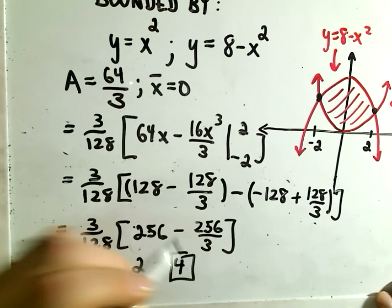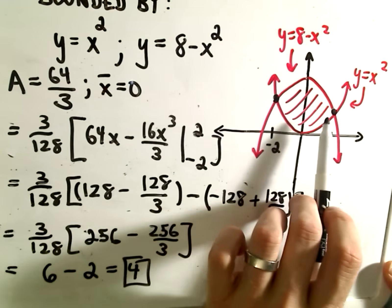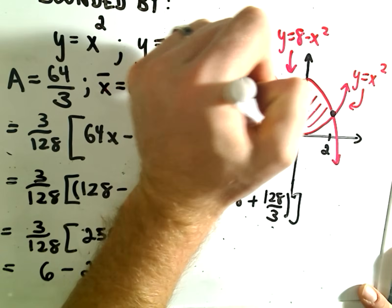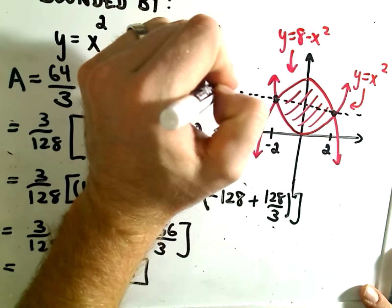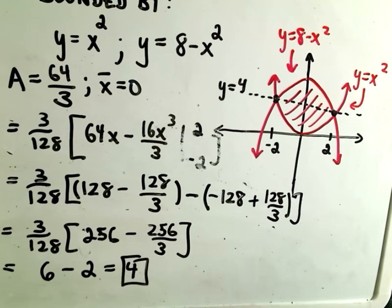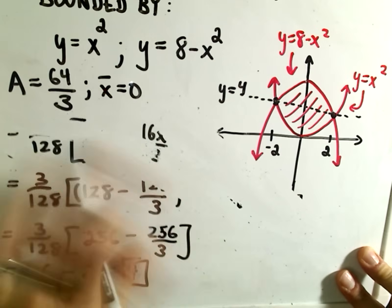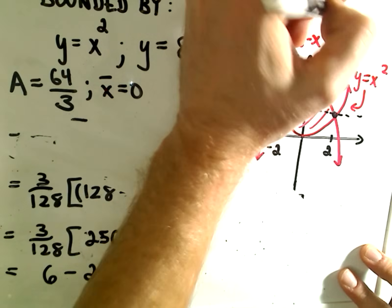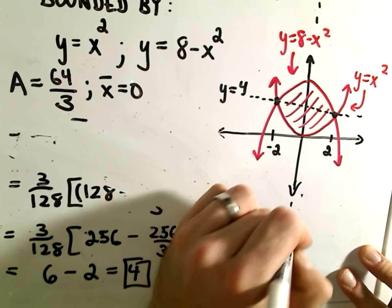So y-bar is the value 4. Notice if you plug 2 in to either one of these functions, you get the y-coordinate of 4. My graph's not the best, it looks a little lopsided. But y = 4 would cut this region right in half. That seems intuitively correct. You could argue by symmetry what x-bar and y-bar would be in this region.